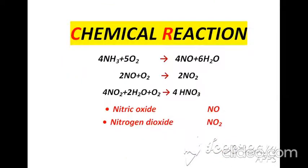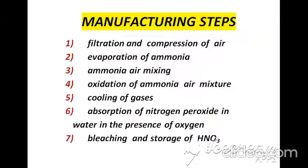According to the chemical reactions, reactants react in three stages. In the first stage, we get nitric oxide, which converts itself into nitrogen dioxide by reacting again with air. In the third stage, by reacting again with air, we get our product, which is nitric acid.